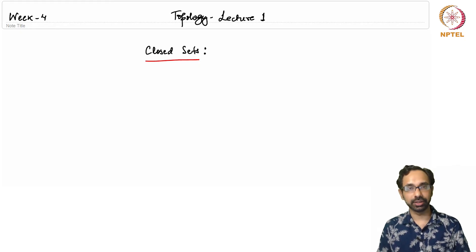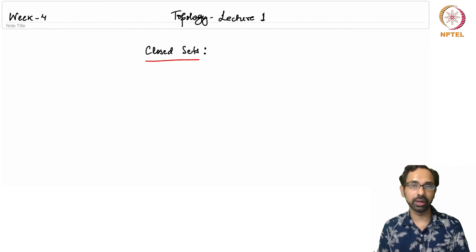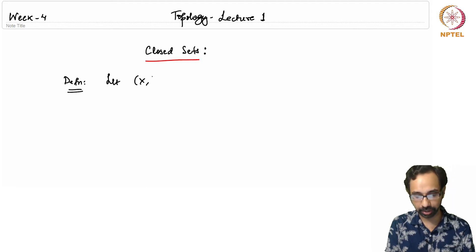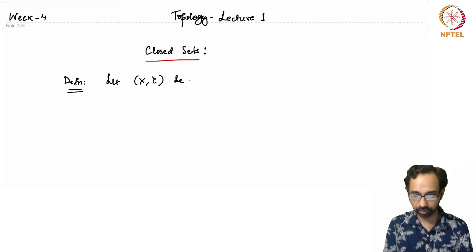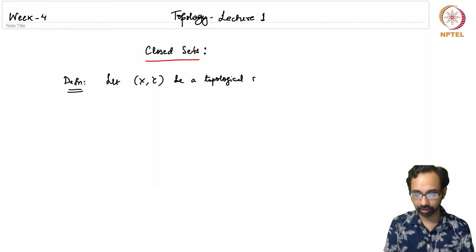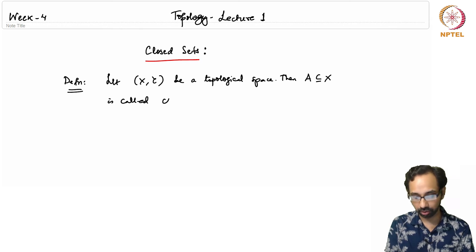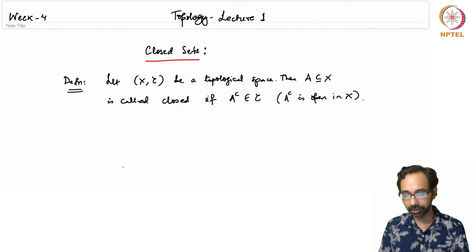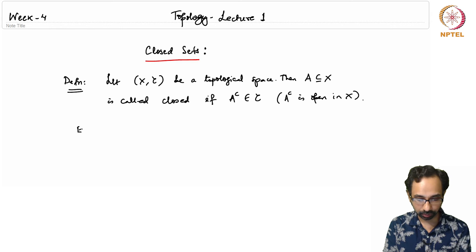Hello and welcome to the week four lectures in this course. We have seen what open sets and topology on a set are, and in this lecture we will learn about a related concept: that of closed sets. Starting with a topological space X with topology τ, a subset A of X is called closed if the complement of A belongs to τ, meaning the complement of A is open in X. Taking complements of open sets gives us closed sets.